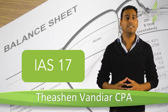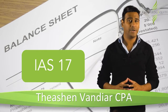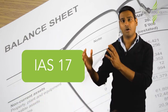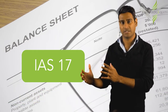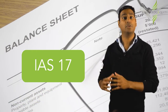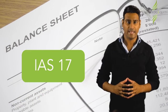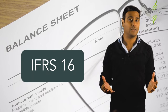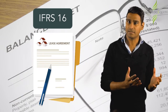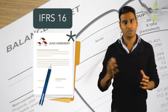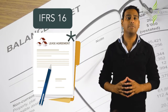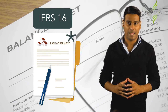Previously, IAS 17 allowed for operating leases to be recognised off balance sheet. But this will no longer be the case in terms of IFRS 16. All leases, subject to a few exceptions, are required to be recognised in the balance sheet.